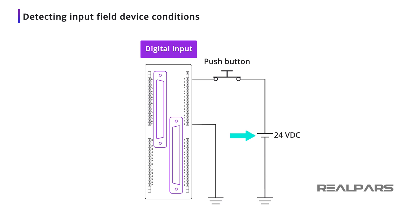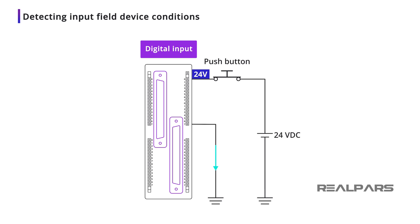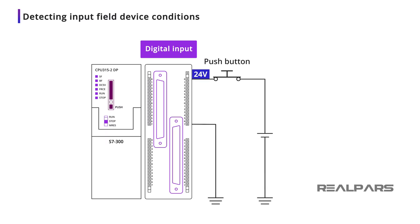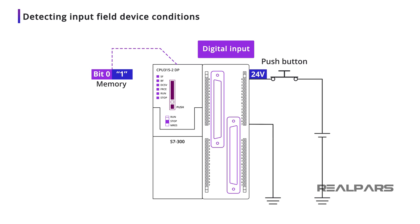If the switch is open, there is 0 volts at the module input terminal. If the switch is closed, there is a positive 24 volts at the module input terminal. The input module will detect either a no-voltage or voltage condition at the input. These voltage conditions represent the open or closed conditions of the switch, and are represented by 1s and 0s in the PLC memory.